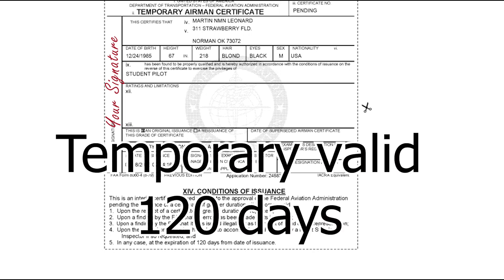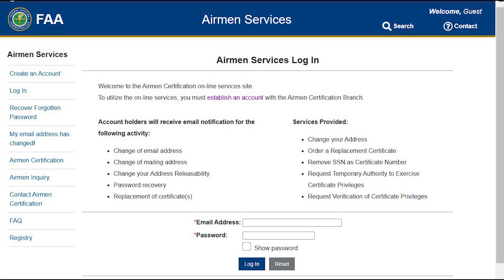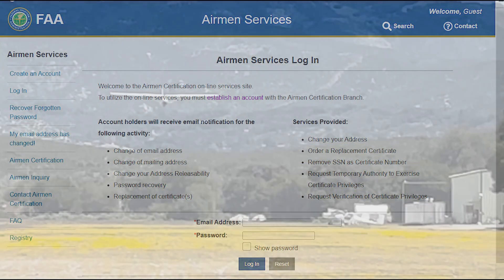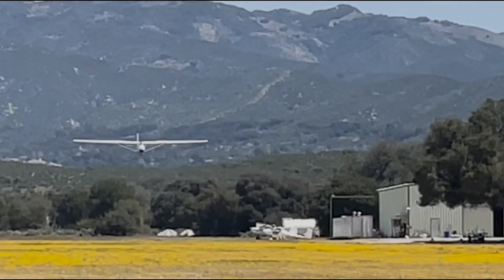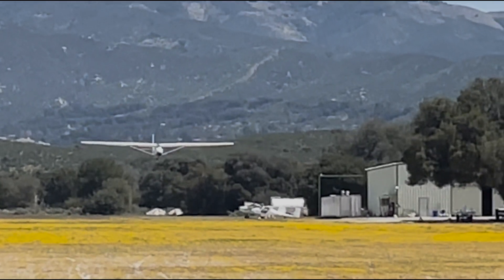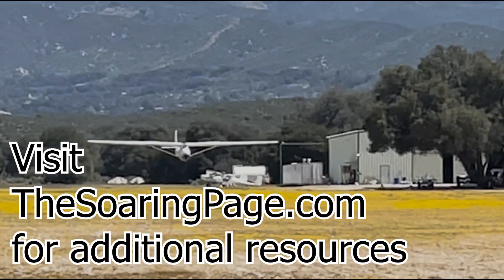The Temporary Certificate is valid for 120 days. You should get a non-expiring plastic certificate in the mail within about 90 days. If you don't, contact your instructor. A new Temporary can be emailed to you from the Airman Services website. That's all there is to it. Be sure to do this well before your time to solo, so that this is not the thing that holds you up. Good luck in your flying journey. Fly safe.